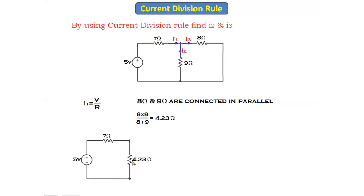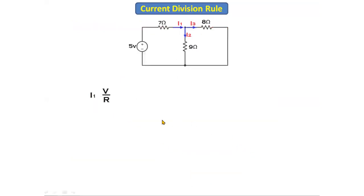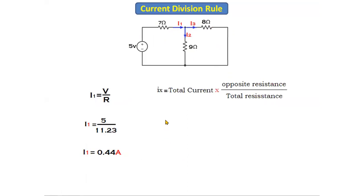These two parallel resistors are converted into a single equivalent resistor of 4.23 ohms. Now 7 ohms and 4.23 ohms are connected in series, so the total resistance is 7 + 4.23 = 11.23 ohms. With a total voltage of 5 volts and total resistance of 11.23 ohms, we calculate i1 = V / R = 5 / 11.23, which gives i1 = 0.44 amperes as the total current.